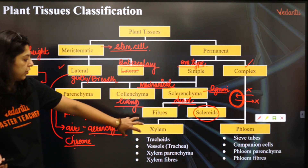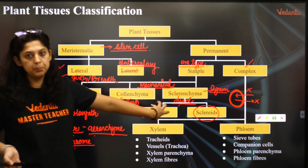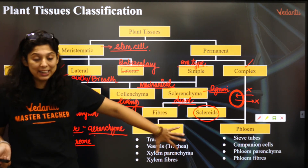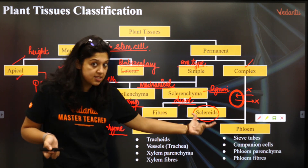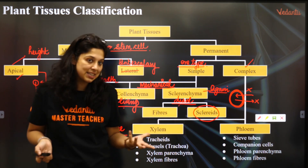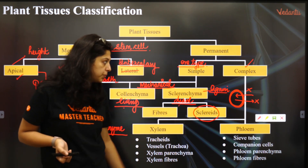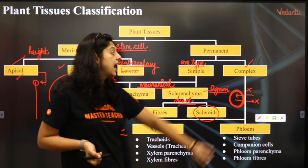Sclerenchyma is further made up of fibers and stone cells — sclerids. Sclerids are found in guava and peach.